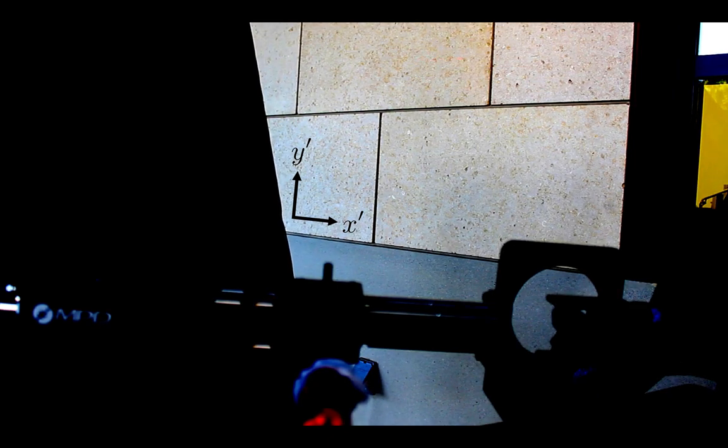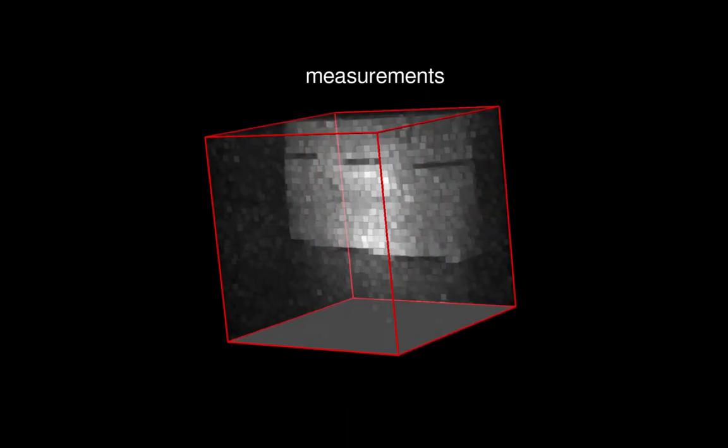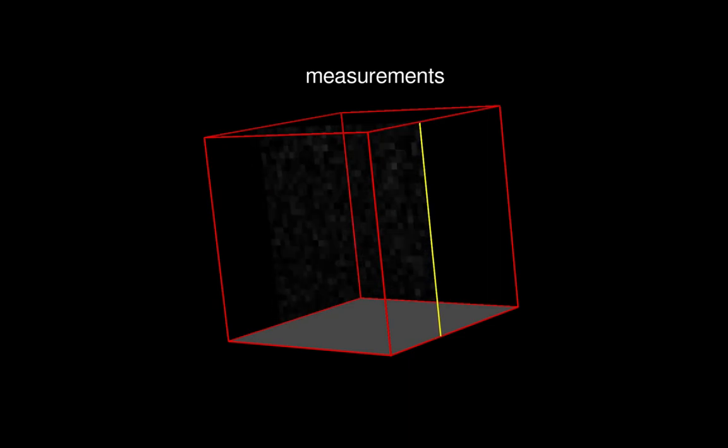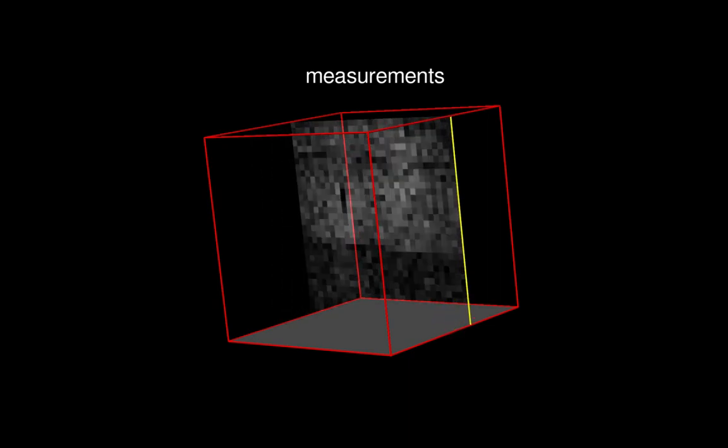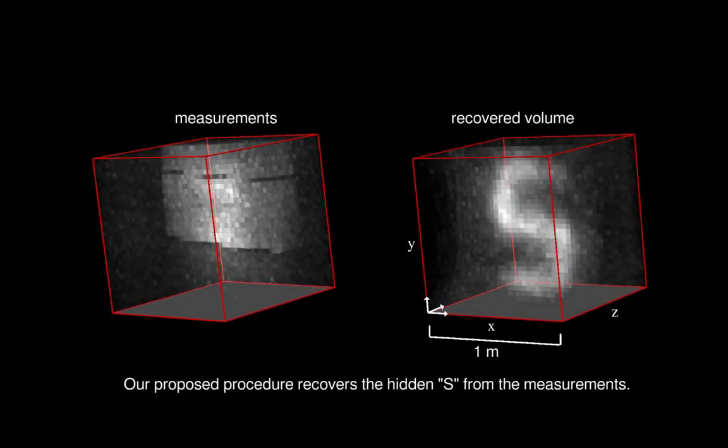This laser spot is very faint due to the strong contribution of sunlight in the scene. This video sequence shows the captured measurement volume. Our reconstruction procedure only requires half a second to recover the hidden object from these measurements.